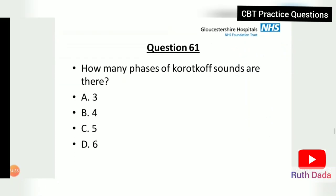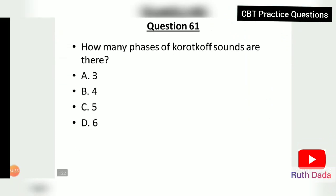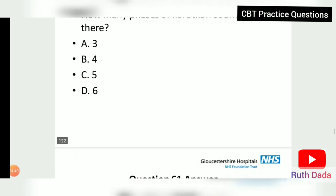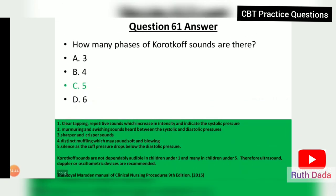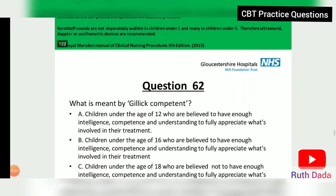Question 61: How many phases of Korotkoff sounds are there? There are five phases: a clear tapping sound, a murmuring sound, a sharp and crispy sound, a distinct muffling, and silence. Korotkoff sounds are not dependably audible in children under one and many children under five, so ultrasound or Doppler devices are recommended.